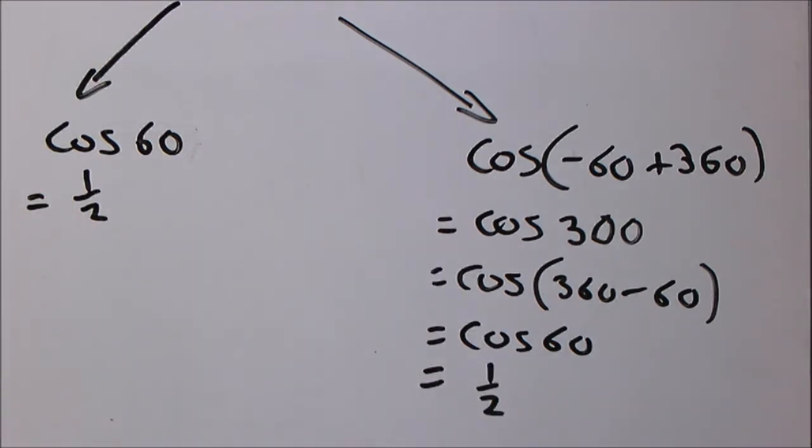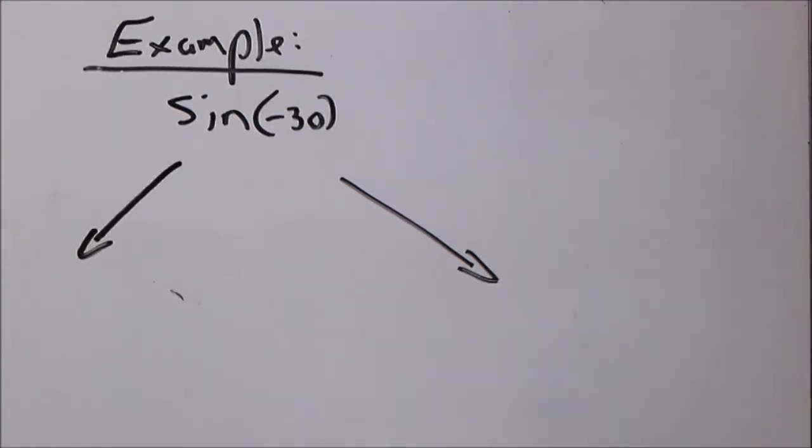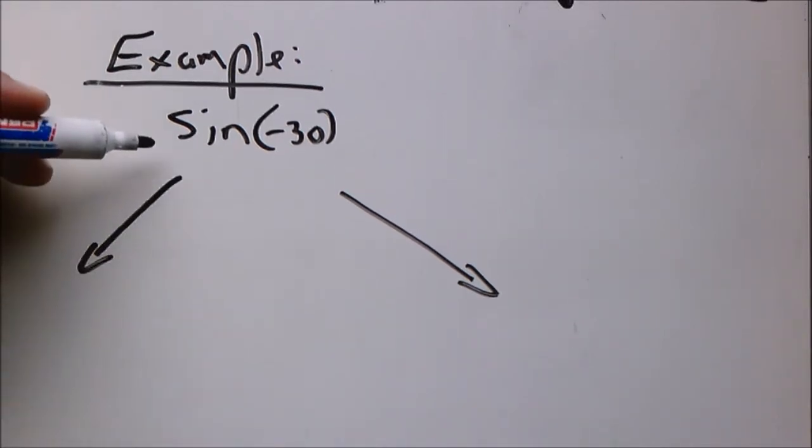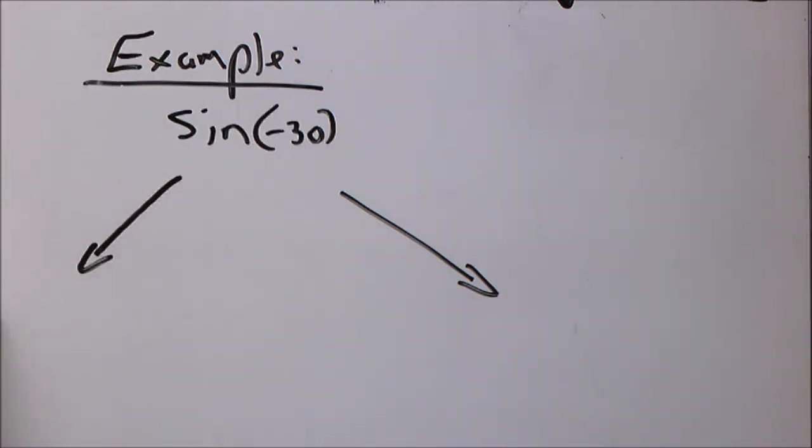We are going to look at another example, sine negative 30. If you remember your rule, you know sine negative theta equals negative sine theta. So you can say this will be equal to minus sine 30, and that means minus a half, because sine 30 is a half. And that's your final answer. And that's why it pays off to know your work.